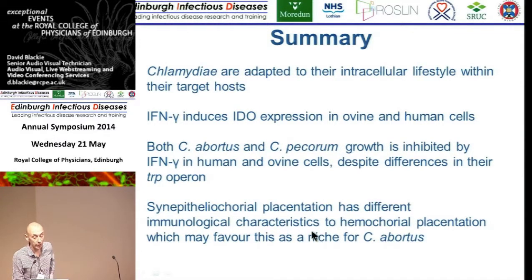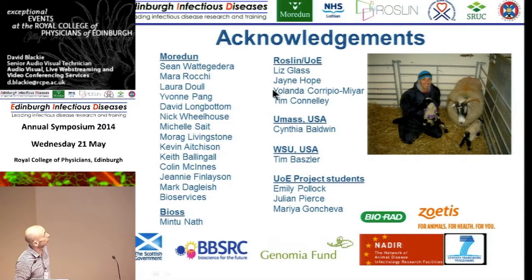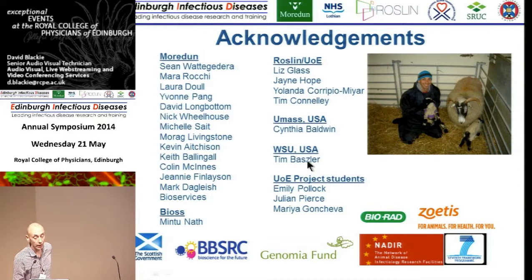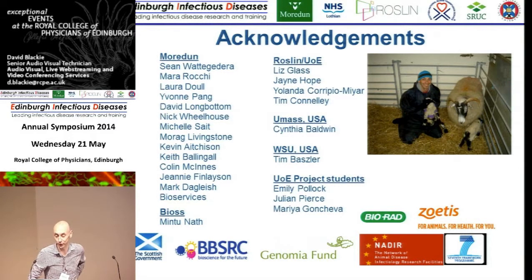In summary: chlamydia are adapted to their intracellular lifestyle within their target hosts; we can induce IDO expression with interferon gamma in ovine and human cells; both Chlamydia abortus and C. pecorum are inhibited by interferon gamma despite differences in their tryptophan operon complements; and the synepitheliochorial placentation in ruminants has different immunological characteristics to that in humans and mice, which may explain the anatomical niche for C. abortus. Thanks to the chlamydia group at Morden, collaborators at Roslin for immunological reagents, Cindy Baldwin, Tim Basler for the H1 cell line, and the UE project students who generated much of the data presented, and to our funders.